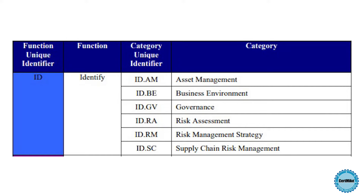Here's a look at a little more detail about the framework. We're now taking the functions and expanding them into categories. So we have five functions and then 23 total categories. For example, for the Identify function, the cybersecurity framework gives six categories: Asset Management, the Business Environment, Governance, Risk Assessment, a Risk Management Strategy, and Supply Chain Risk Management.